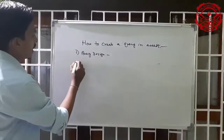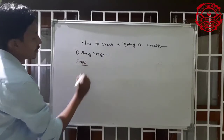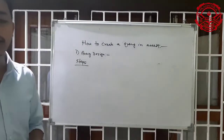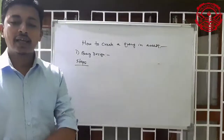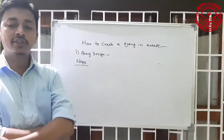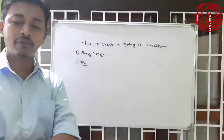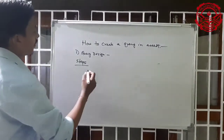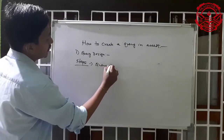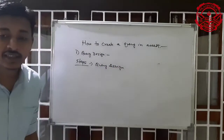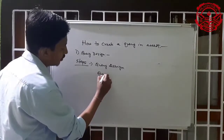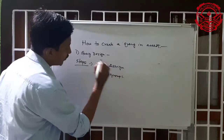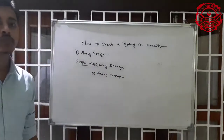First we have to discuss the steps. Number one is query design. Query design is a way that we can create a query. First step: click the query design in the query group on the create tab.